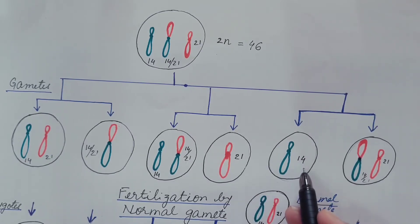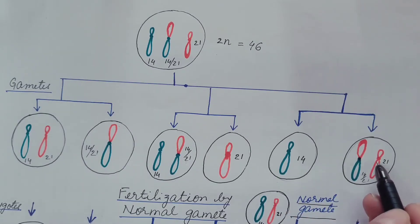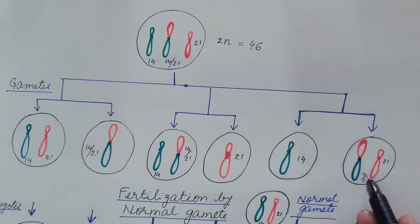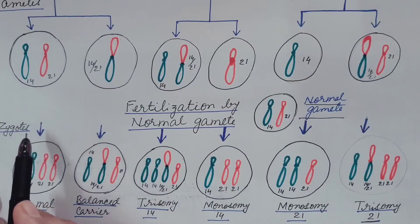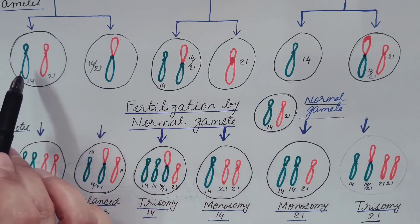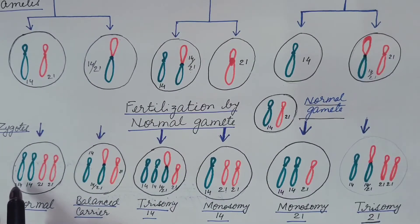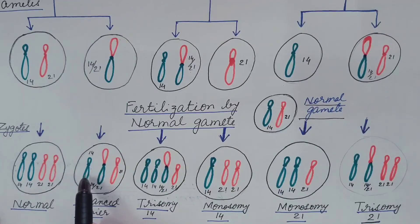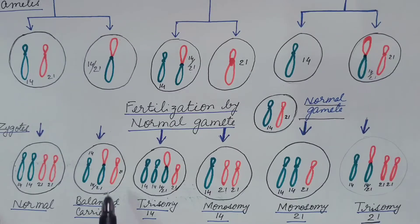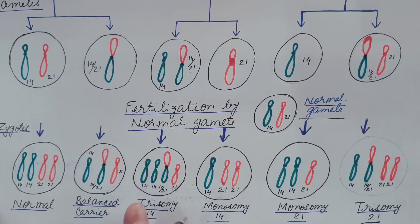The third gamete has one copy of normal chromosome 14 plus the 14-by-21 translocation chromosome. The fourth has one copy of chromosome 21 with chromosome 14 missing. The fifth has one copy of chromosome 14 and one 14-by-21 chromosome. When the second gamete fuses with a normal gamete containing one copy of chromosome 14 and one copy of chromosome 21, the offspring will have one normal 14, one normal 21, and one 14-by-21 — this individual is a balanced carrier because all gene copies are present in two copies, so they are phenotypically normal but carry the translocation.